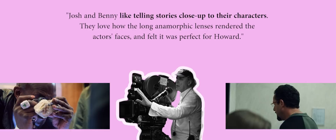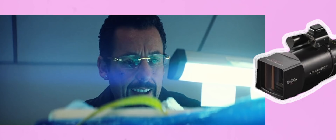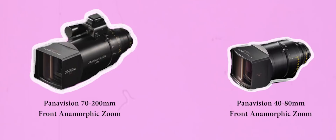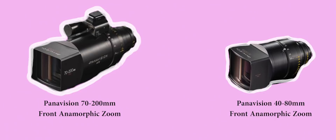He even managed to track down a rare 360mm Panavision anamorphic prime lens which allowed them to shoot tight shots with a compressed, uneasy feeling. They also implemented zooms to introduce dynamic movement and mimic subjective point-of-view shots. These were done on Panavision front anamorphic zooms, specifically the 70-200mm and 40-80mm.